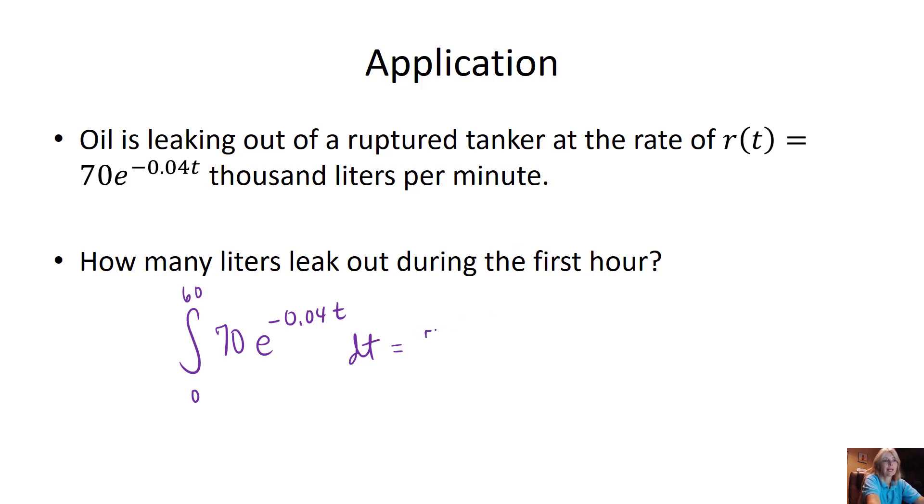And so I need to find the antiderivative, then plug in my 60 and 0. And so the antiderivative - remember that e to the kt, the antiderivative is 1 over the k, and then you leave this piece alone. So I just wrote the 70 over it. And I'm going to evaluate it at 0 to 60.